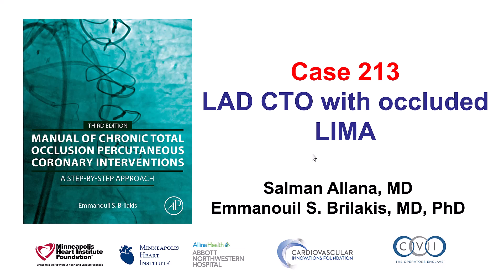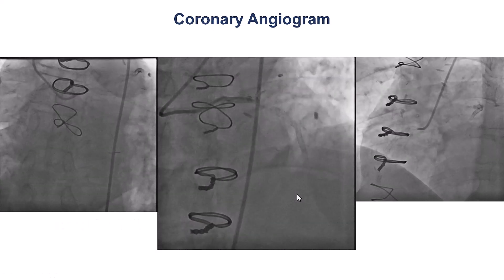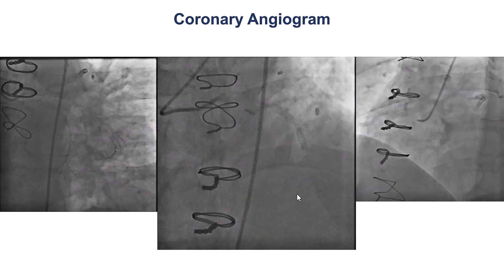This is a case of an LAD CTO in a patient with an occluded LIMA bypass graft. The patient had two previous bypass operations. The first one was done 20 years prior and had a LIMA to LAD, but then the LIMA occluded. He had PCI of the LAD, then had restenosis and underwent repeat bypass two years prior with a vein graft to LAD. But then he came again and was found to have significant anterior ischemia with a low ejection fraction, along with an LAD CTO, and was sent for intervention.